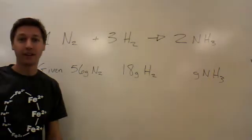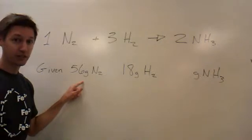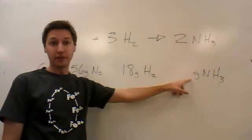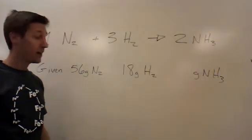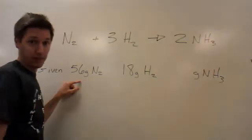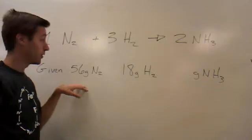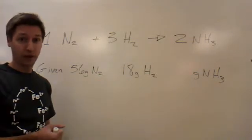What if you went to the chemical pantry and found out that you had 56 grams of nitrogen and 18 grams of hydrogen? How many grams of ammonia could you make? To do this, we need to remind ourselves that we can't just compare masses. We need to turn these into moles. The first thing we're going to do is turn these masses into how many moles of each one we have.